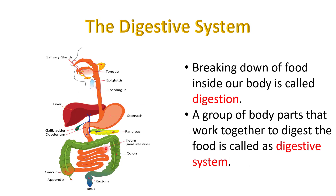This is the image of a digestive system. First of all, let's see what digestion is. Breaking down our food inside our body is called digestion. And what is the digestive system? A group of body parts that work together to digest the food is called the digestive system.